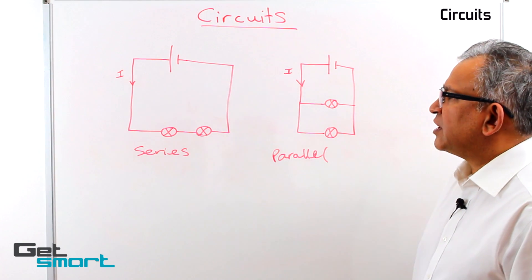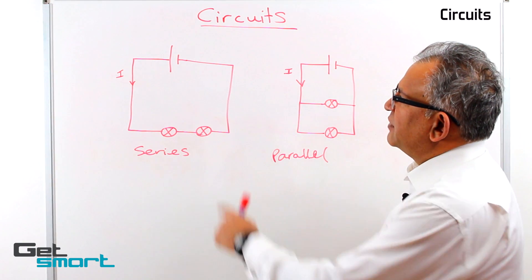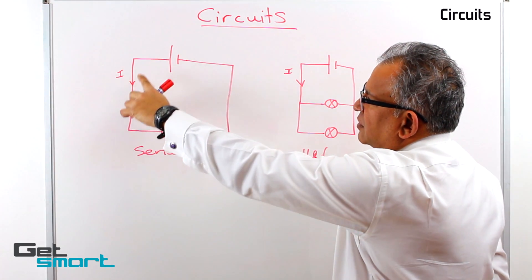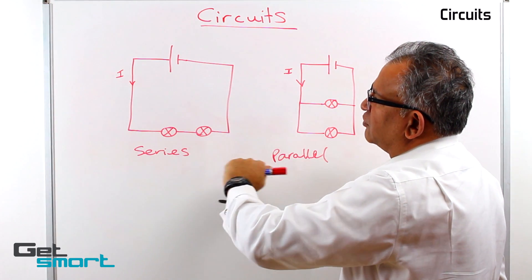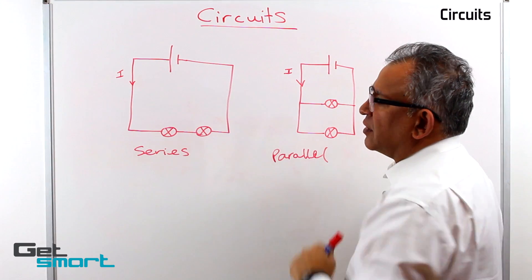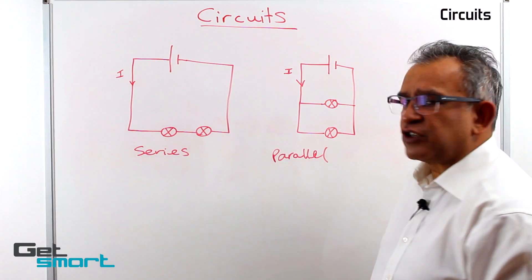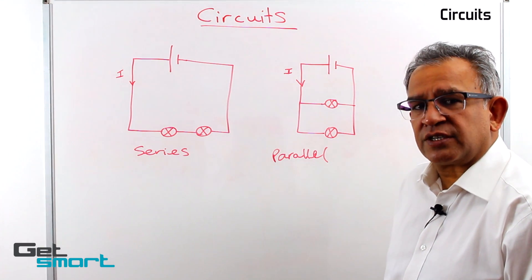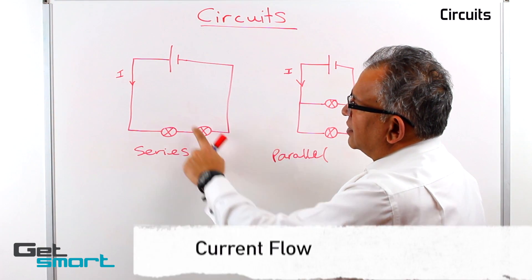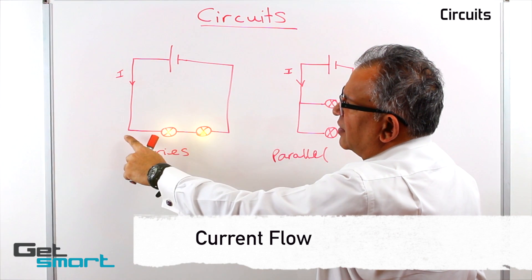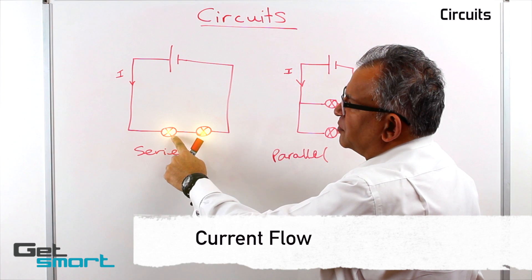So in the diagram you can see that in the series circuit we have a continuous flow of electricity going through two components, and I'm using two bulbs as a way of showing you how the circuit is constructed. So in the series circuit, the current flows from the battery from the positive side through both the first bulb and then through the second bulb.